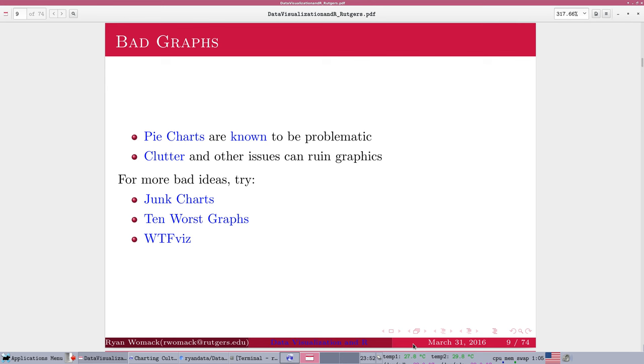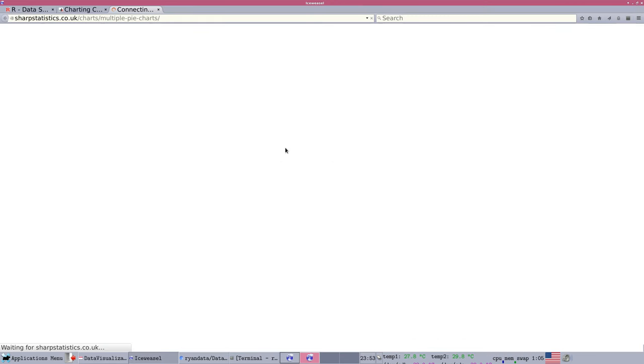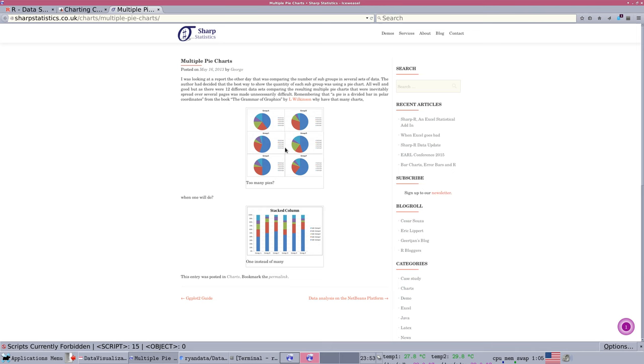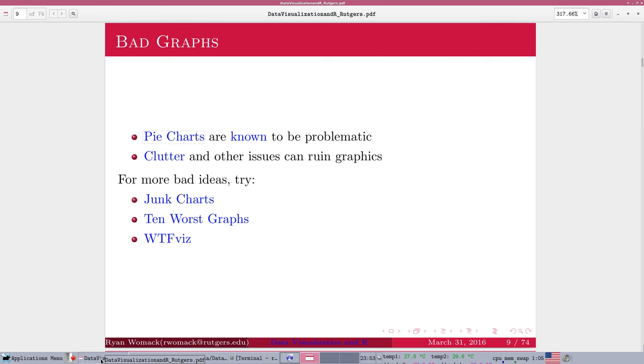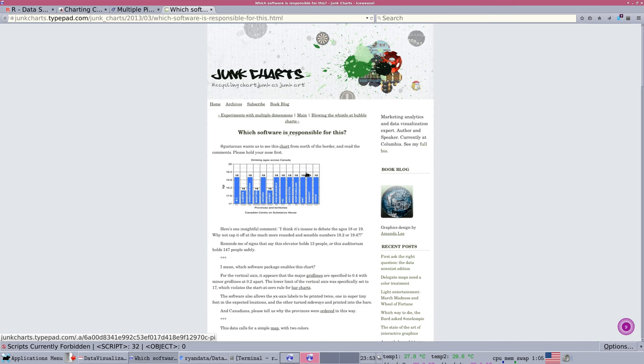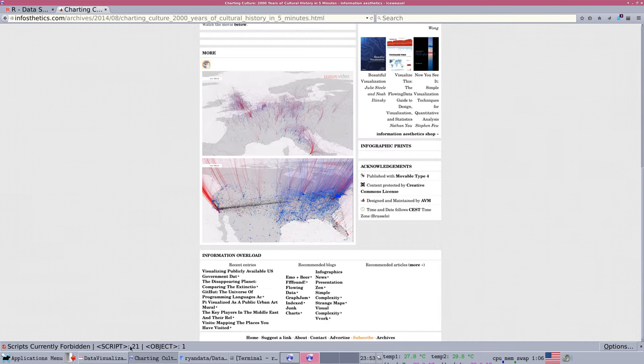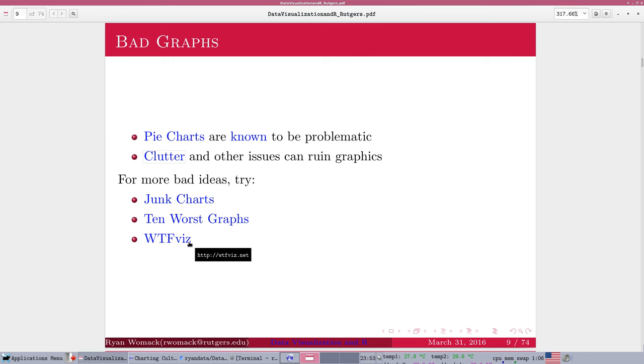What I do want to talk about is some general principles of what's good and bad in data visualization. This is very introductory, so we're not going to talk about too much. There's whole fields that study this. I'm not claiming to represent all of that. But some things you might want to know if you're thinking about what's good and bad in data visualization. One thing is that pie charts are really considered to be problematic by a lot of the data visualization experts, and we're going to see those examples in just a moment. Then other things like clutter is another thing to avoid.